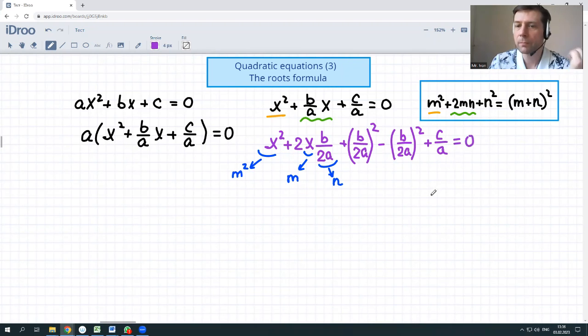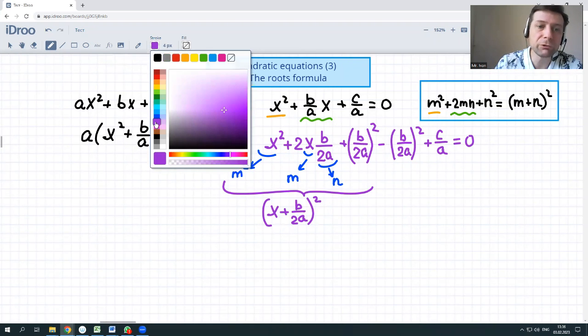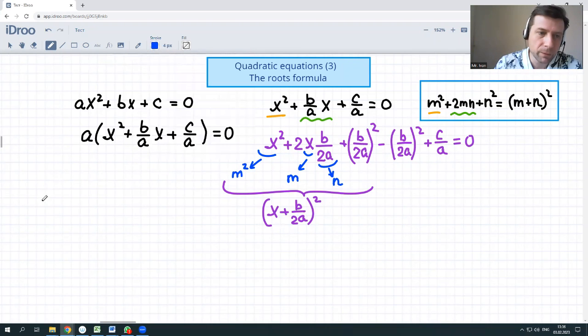equals to zero. Great. What did we get? This first part now is x plus b over 2a squared minus b over 2a squared plus c over a. That's what we wanted to have. Let me rewrite one more time: x plus b over 2a squared.